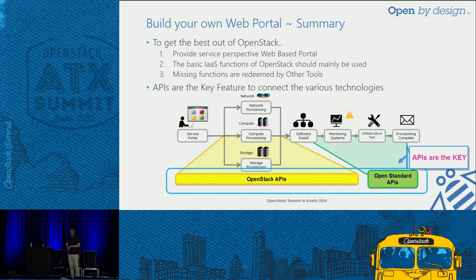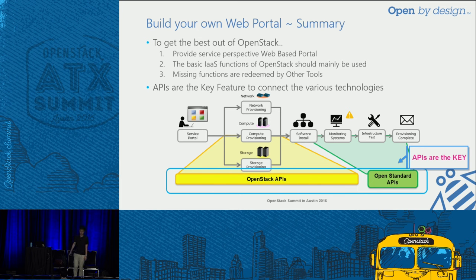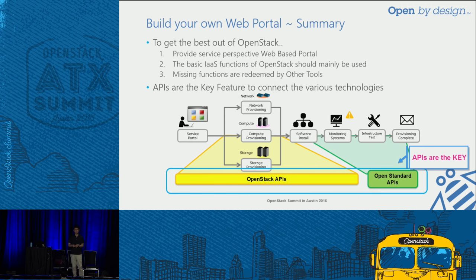Let me summarize this chapter. I've talked about three points to get the best out of OpenStack, and with my demo application I hope you got the idea. One more thing I really want to say is that clients ask me: what's the best thing about OpenStack? I tell them APIs are the best thing. With those APIs, I can really connect multiple technologies and make it look like a single unified application — I connected OpenStack and Chef in the demo application.